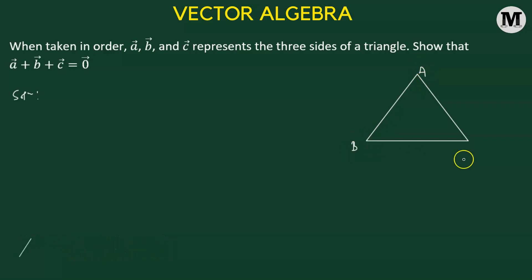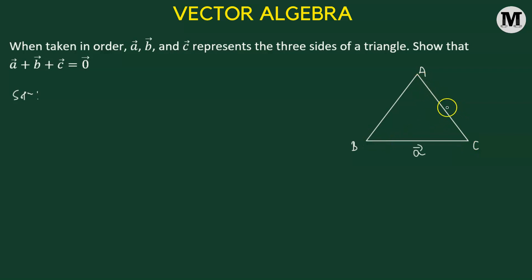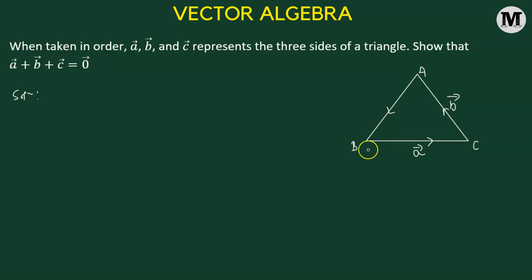We'll consider the side opposite to vertex a, which is BC, represented by vector a. Then the side opposite to vertex b will be represented by vector b, going in a particular order. Now we have the third side AB, with the vector pointing from vertex a towards vertex b, and this is going to be vector c.